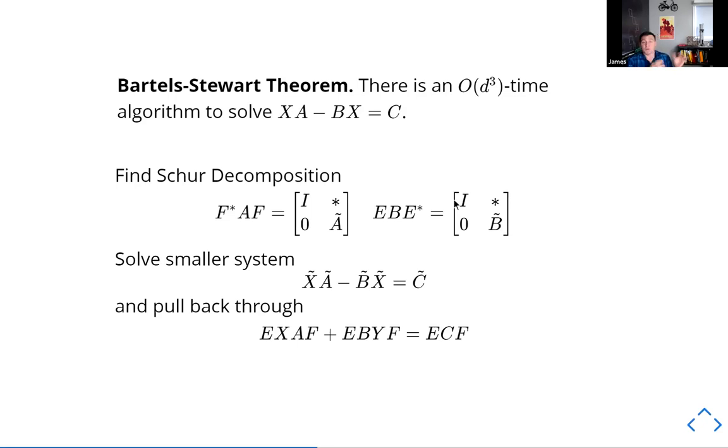If I solve it on these small problems, I can pull back through these matrices and get to my full solution. Now, there is a technical problem that maybe A might not be invertible and might not be able to move this way, so you sometimes have to add a phase to this. Again, we're simplifying for the purposes of exposition.